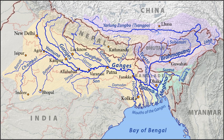Also covered are Himachal Pradesh 4,317 square kilometers, Delhi, Arunachal Pradesh 1,484 square kilometers, the whole of Bangladesh, Nepal and Bhutan. Several tributaries rise inside Tibet before flowing south through Nepal. The basin has a population of more than 500 million, making it the most populated river basin in the world.